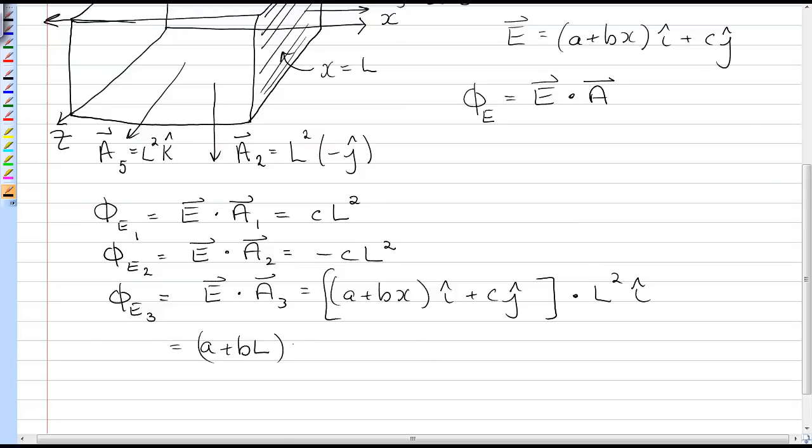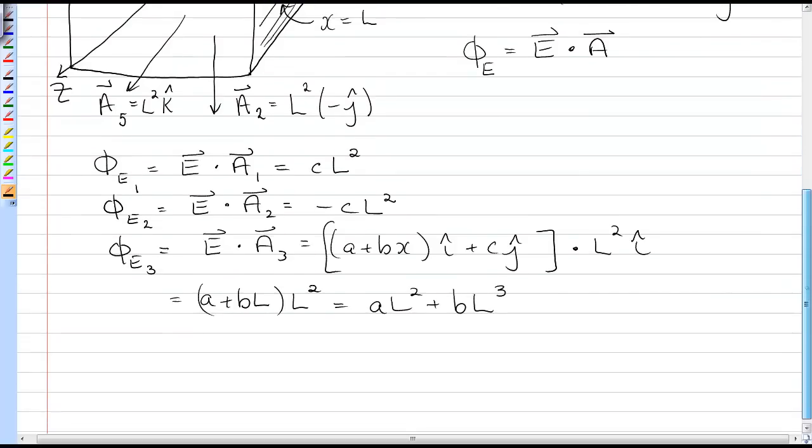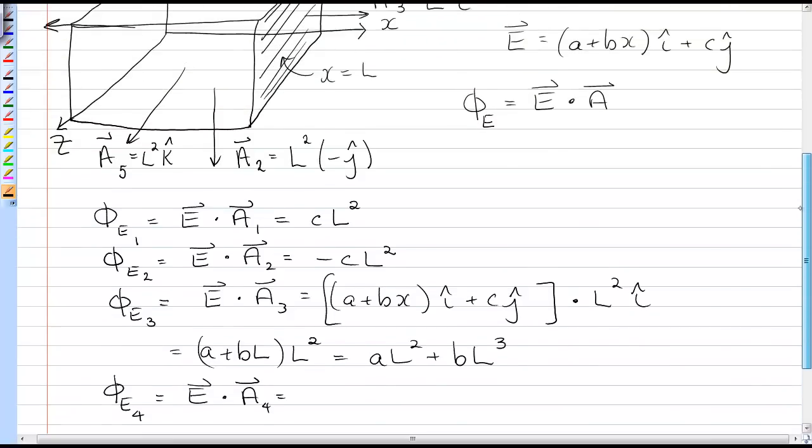And I'm going to have the i-hat part of the electric field, and then I'm going to have L squared. So I end up with aL squared plus bL cubed. Now the electric flux for face 4, E dot A4, and let's see what we get for A4.